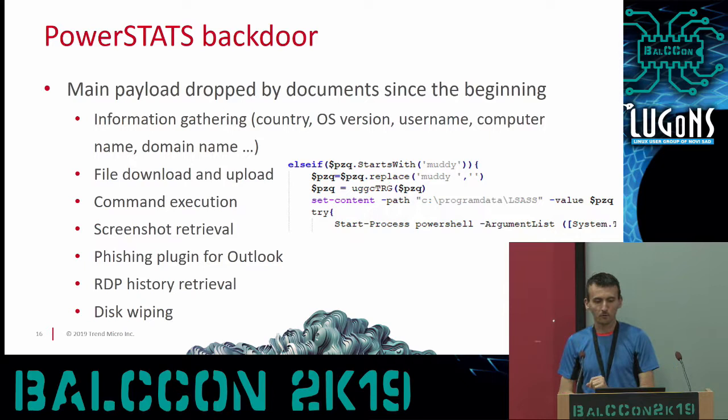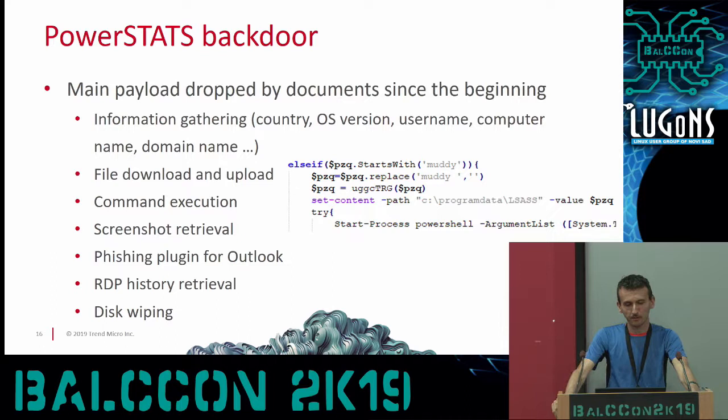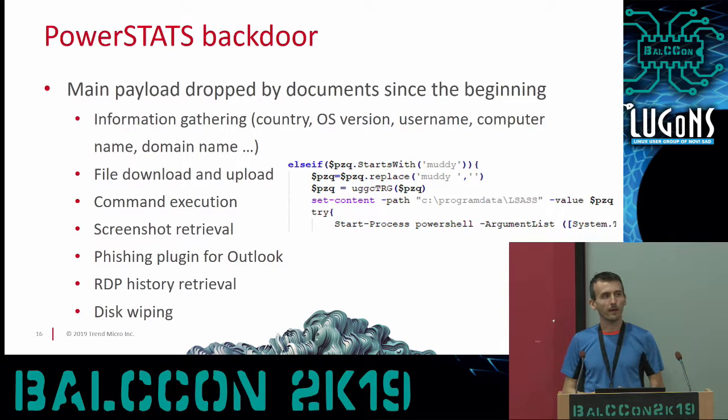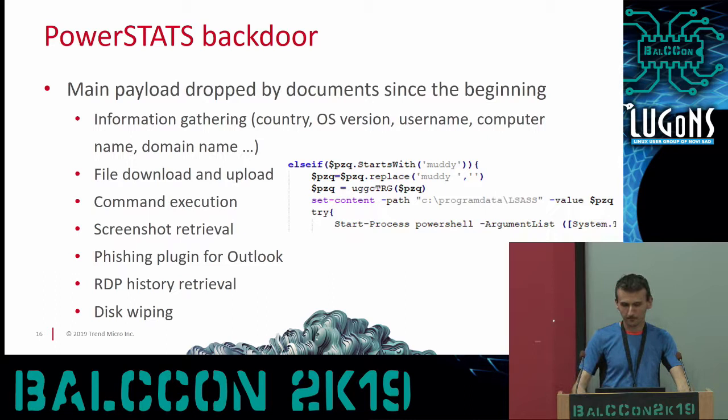Now let's talk about the backdoors and post-exploitation tools. The main backdoor they have been using for most of the time is called PowerStats. It's a standard backdoor with features for downloading, uploading files, taking screenshots, and so on. Interestingly, in the screenshot you can see one command called 'muddy' - this is why this threat actor was called MuddyWater by researchers, because it's a command sent from C2 servers starting with the keyword 'muddy' followed by the command to execute.